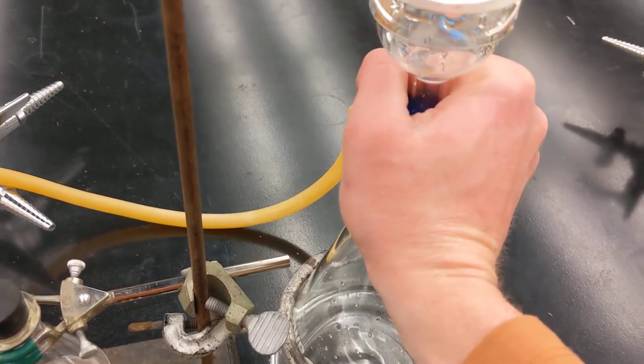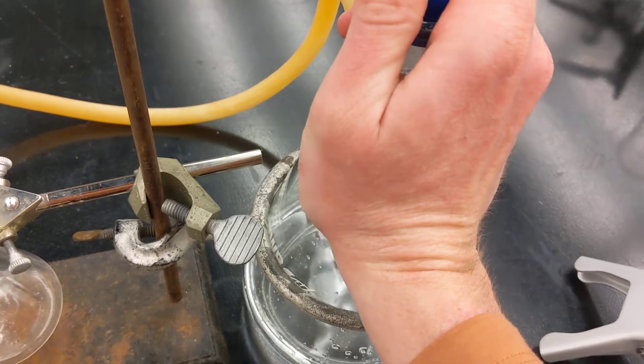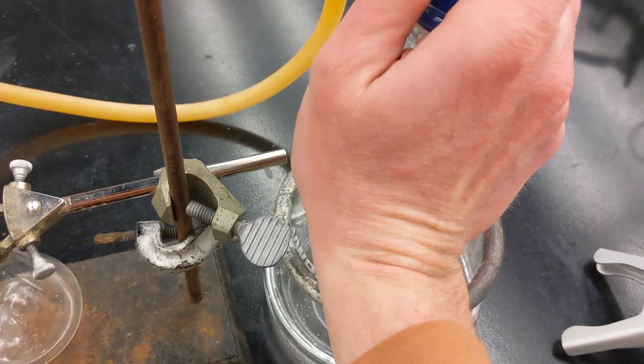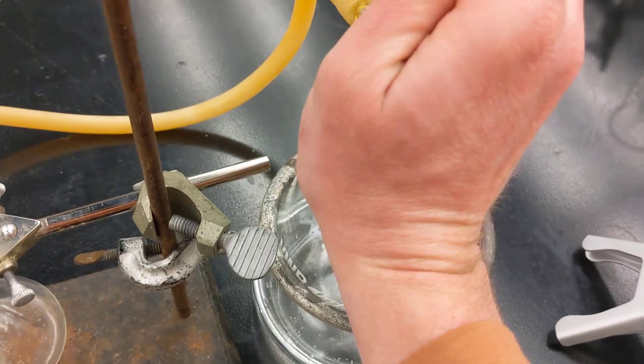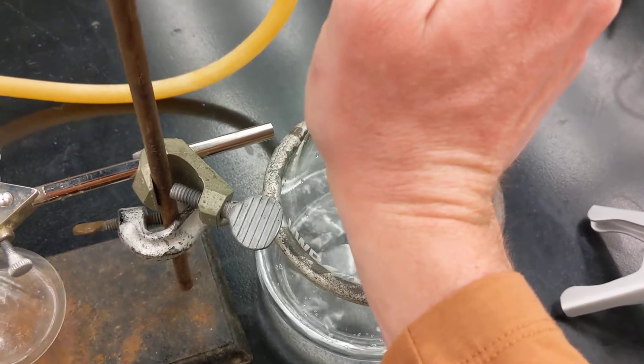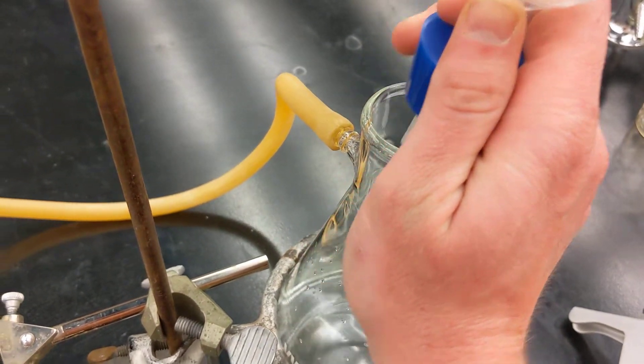Now you can very carefully remove the septum. There should not be a vacuum in here to remove this. Slight vacuum. Okay, remove that. I'm going to place this upside down.